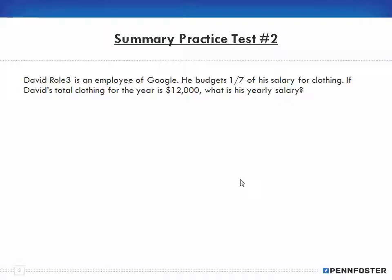David Role is an employee of Google. He budgets one-seventh of his salary for clothing. If David's total clothing for the year is $12,000, what is his yearly salary? So if one-seventh of his salary is used for clothing and that amount is $12,000, that's our equation. One-seventh of his salary and the final amount for total clothing is $12,000.